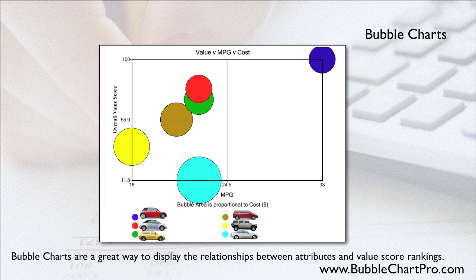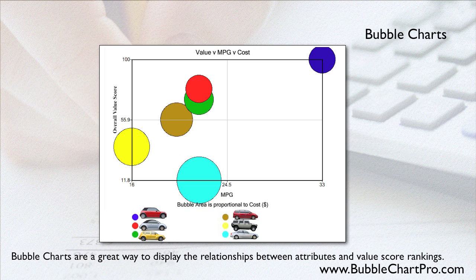Here is a BubbleChart Pro Plus chart displaying the relationship between the two attributes and the value score. Here, you can quickly see that the car with the highest value points had the highest gas mileage and one of the lowest costs, and the car with the lowest value points had the highest cost but was in the middle range for gas mileage. You can also see how the other cars were ranked relative to gas mileage and cost. An important thing to remember here is that BubbleChart Pro Plus is meant to support your decision-making process, not make the decision for you. So it is often useful to start with a small set of projects that you have ranked and use that to develop your attributes and relative weighting model.